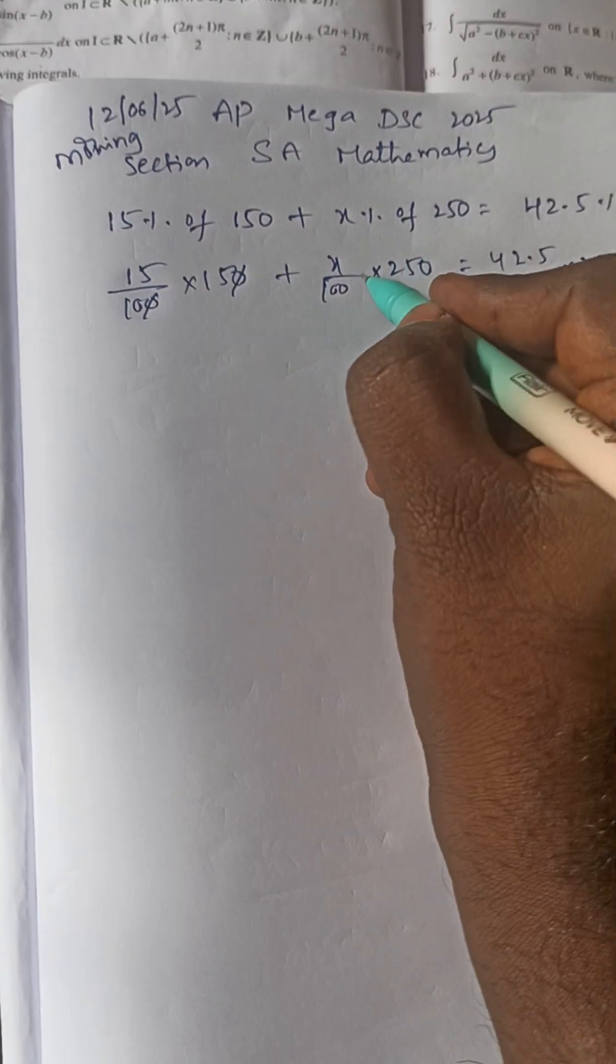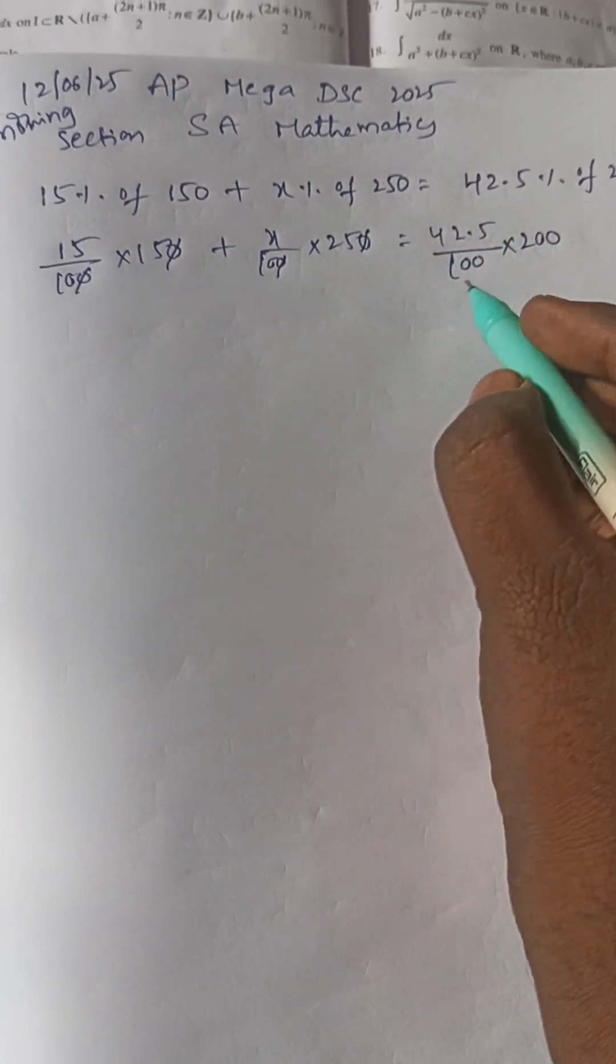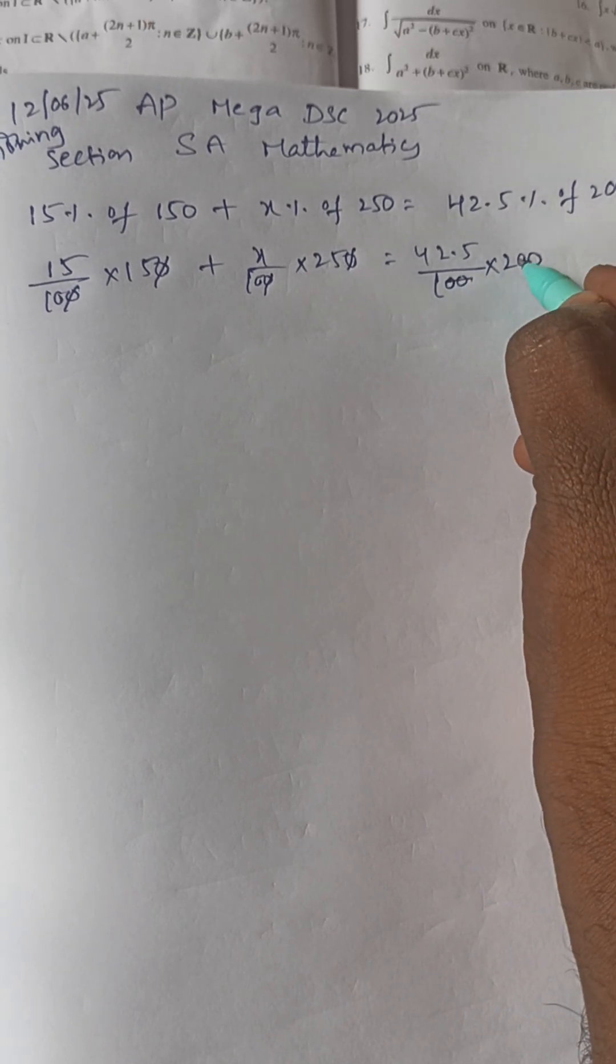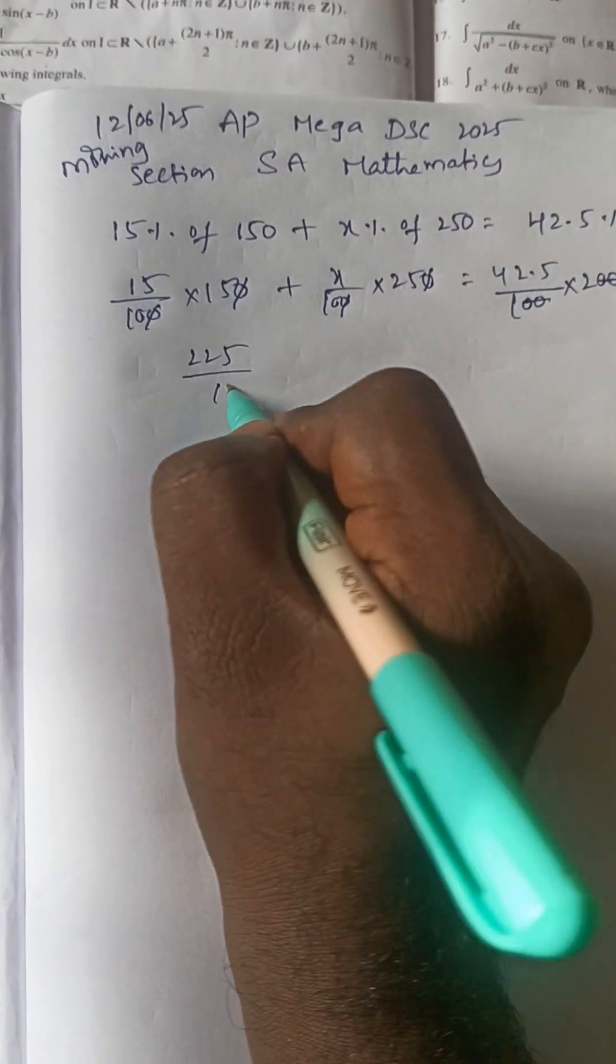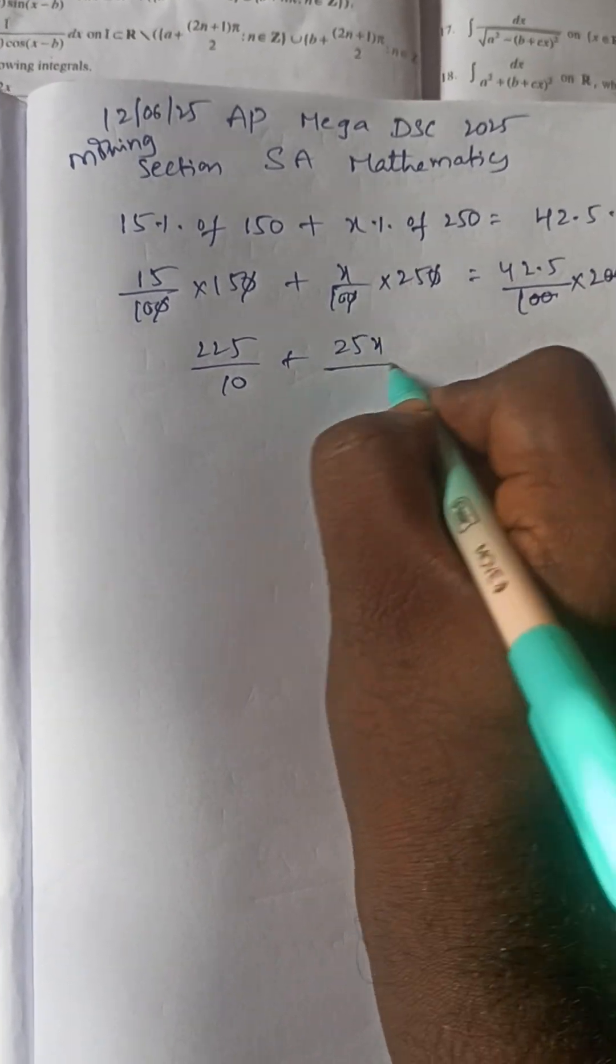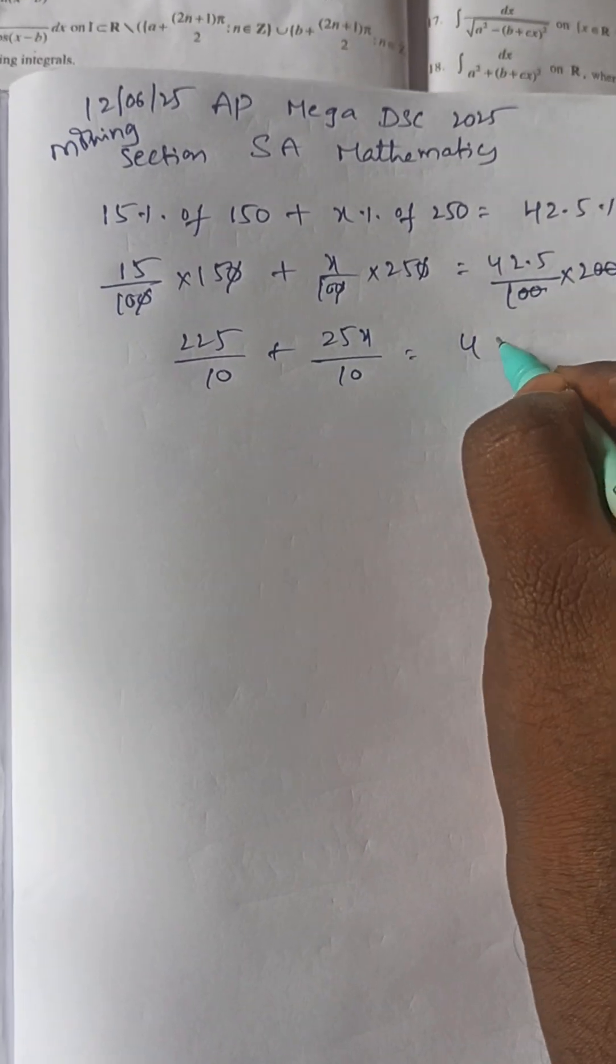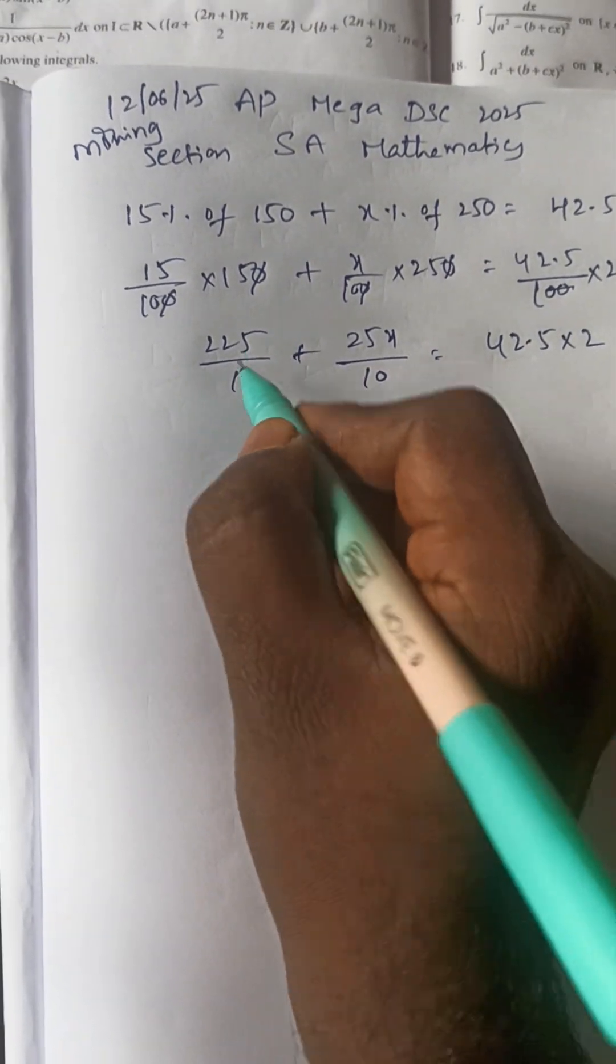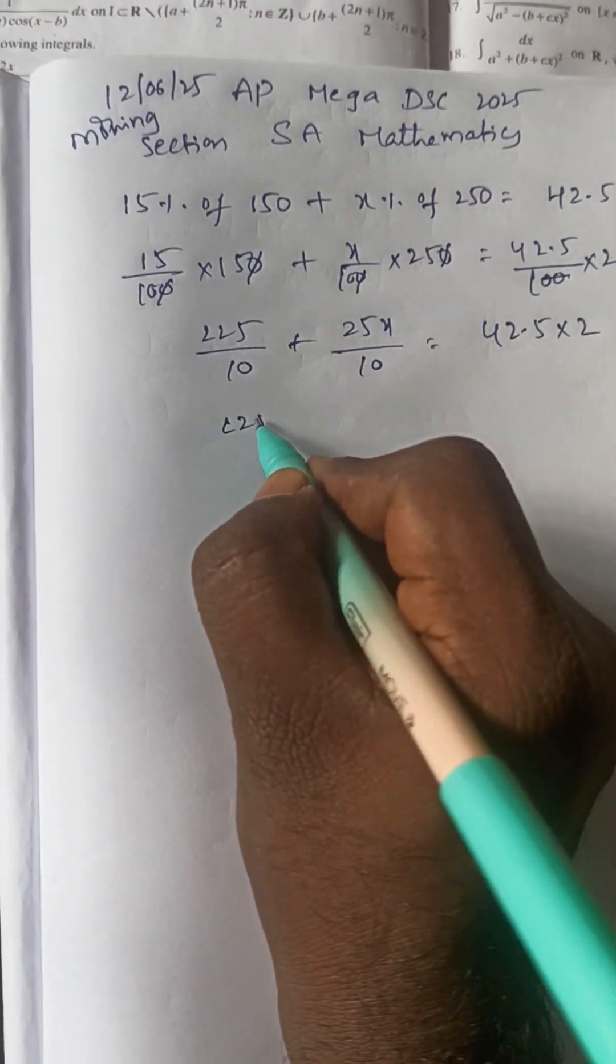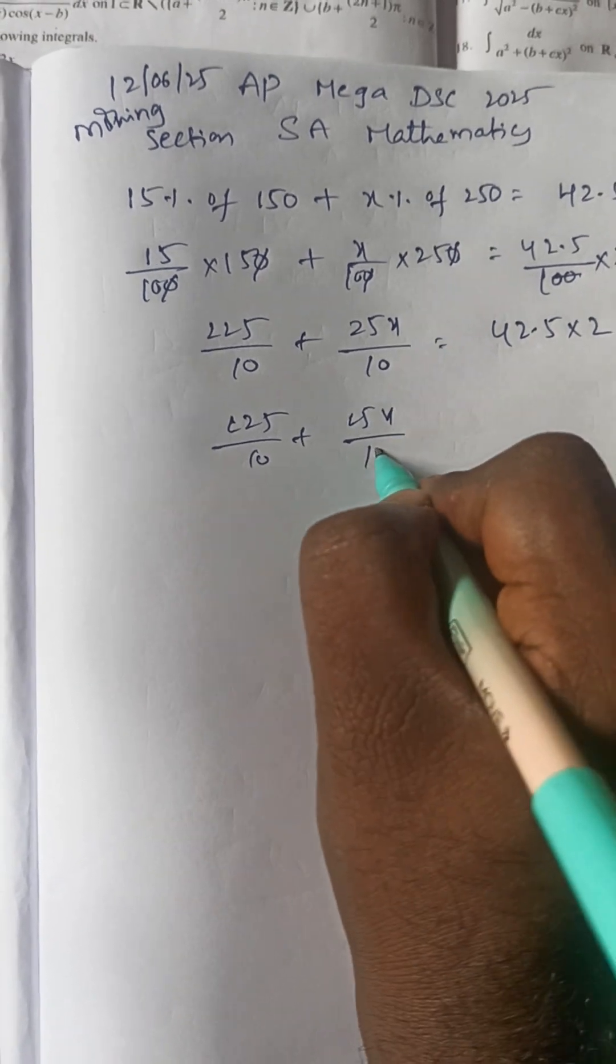Cancel the zeros. Two zeros here, two zeros here cancel. So 15 becomes 225 by 10. Then x into 25 becomes 25x by 10. Here 42.5 into 2, so 22 by 10 plus 25x by 10.